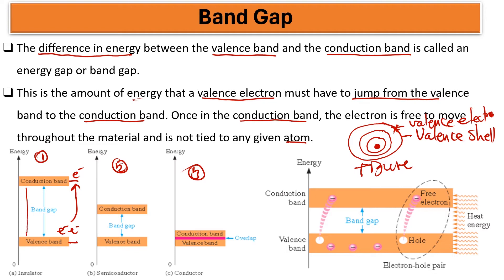Electrons in the valence band do not contribute to electrical conductivity — they must be able to move into the conducting band. When we look at the gap between the valence band and the conducting band for an insulator, it is a wide gap. You need a lot of energy — the electrons need a lot of energy in order to cross this gap. They need about 50 joules of energy, whether heat or any other form, such as temperature, to move them from the valence band to the conduction band.